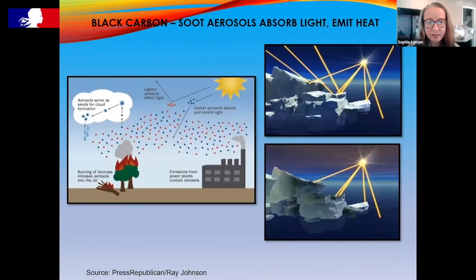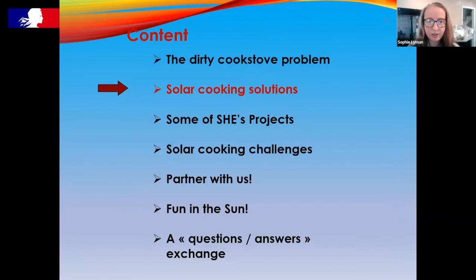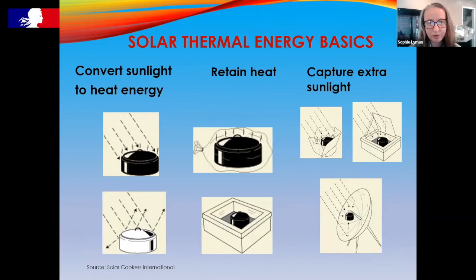Dirty cook stoves are also a big contributor to climate change, and black carbon soot emits heat. Now I'll talk about solar cooking solutions. This is a low-tech technology — I'm not talking about solar photovoltaic which uses electricity. We're just talking about black pots and reflectors. You need a black pot to convert sunlight to heat energy. You can retain that heat with a greenhouse enclosure of transparent plastic bag or glass top, and you can capture more sunlight with reflectors.